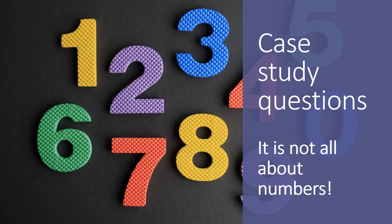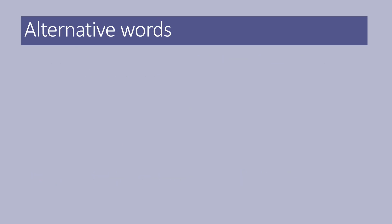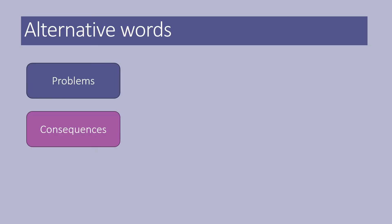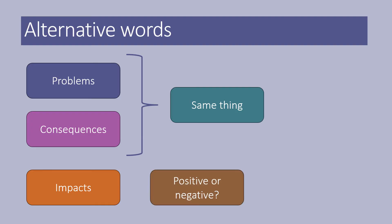Now for case study questions. Key command words in seven mark questions are describe, explain, and justify — it's worth understanding what they mean, because the command word dictates how you write and structure your response. In questions there can be alternative words: one question might be worded slightly differently but mean the same thing. For example, problems and consequences mean the same thing. Whereas impacts, unless it states positive or negative, can mean you write either positive impacts, negative impacts, or both. Problems and consequences tend to be negative unless the question says otherwise. Impacts, unless stated, means write both.